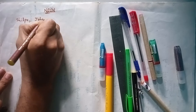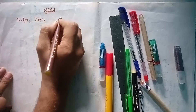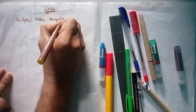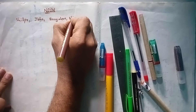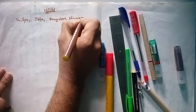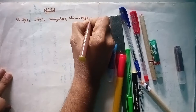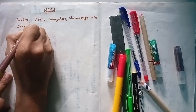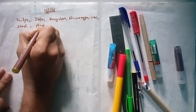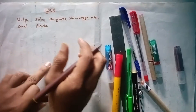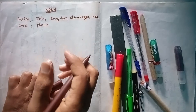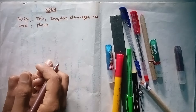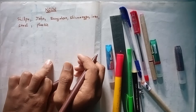Examples of nouns include: John, Bengaluru, Shivamogga, iron, steel, plastic — all of these are words used to denote a person, place, animal, or thing. Next, we discuss about kinds of nouns.